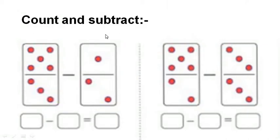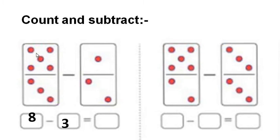Count and subtract. There are 8 dots. Out of 8, I have to cut these 3 dots. Then, how many dots are remaining? By cutting 3 dots from 8 dots, I get 1, 2, 3, 4, and 5 dots. So the difference of 8 and 3 is 5.